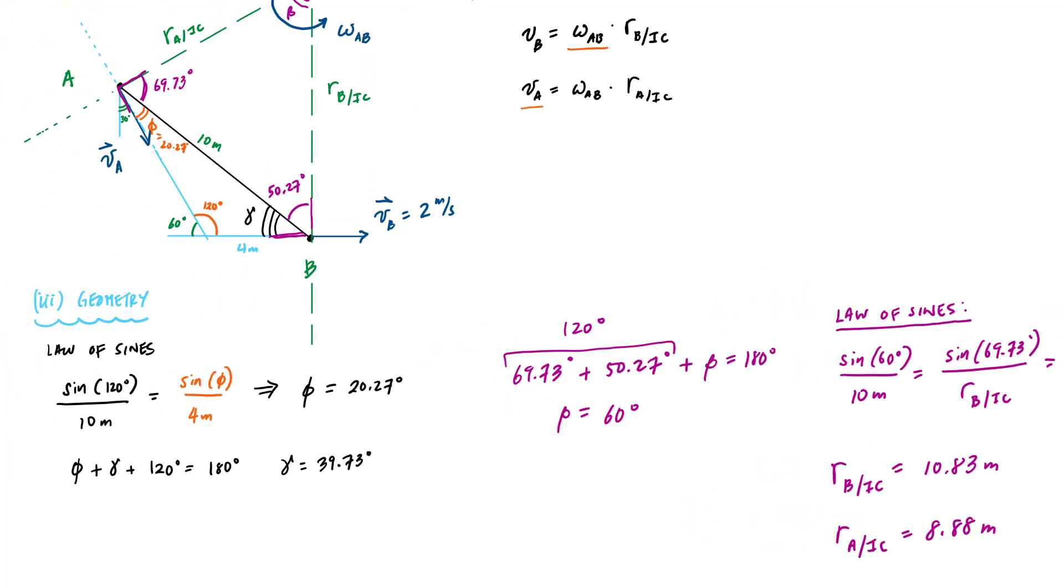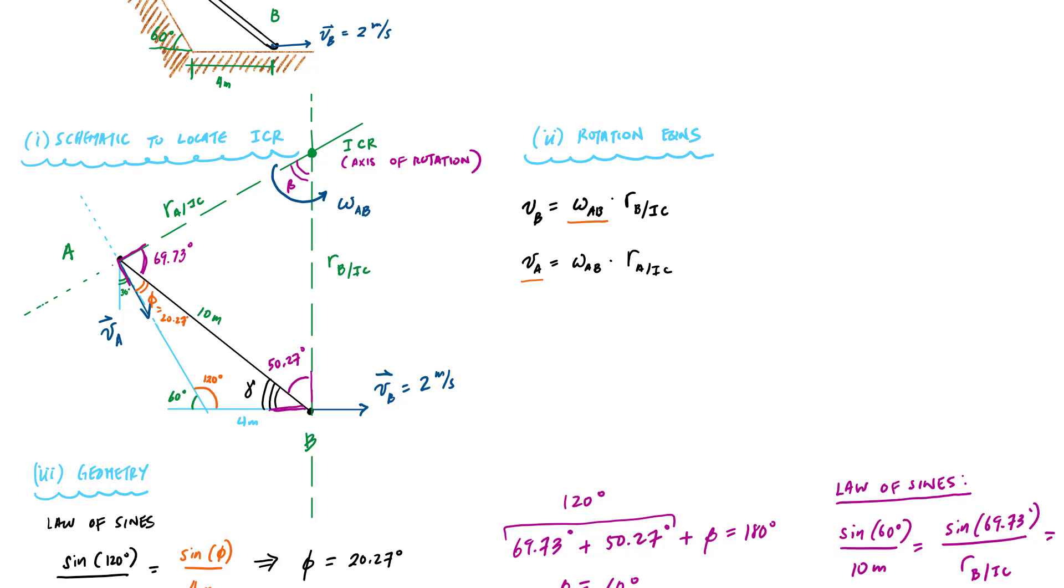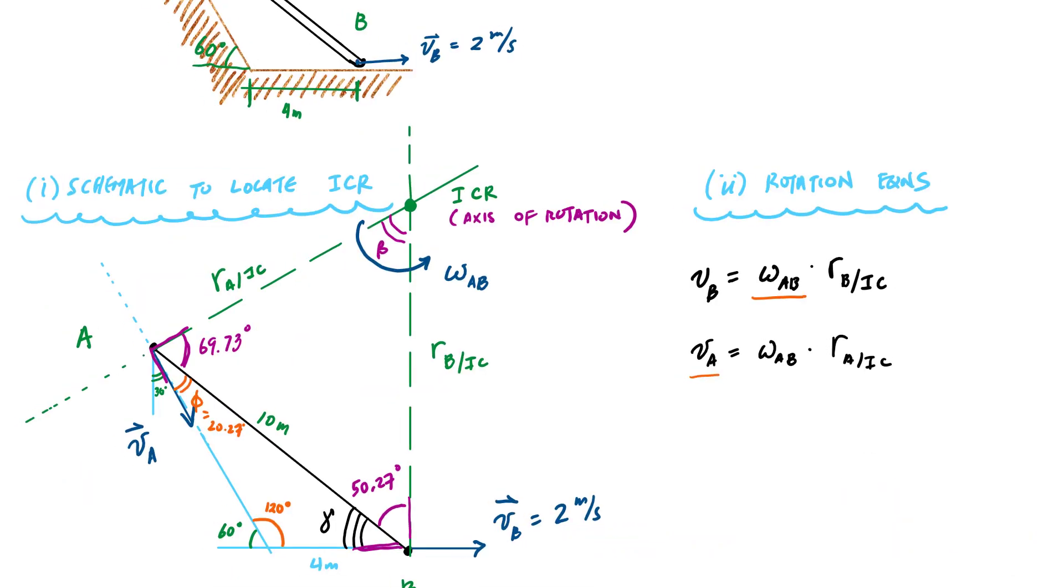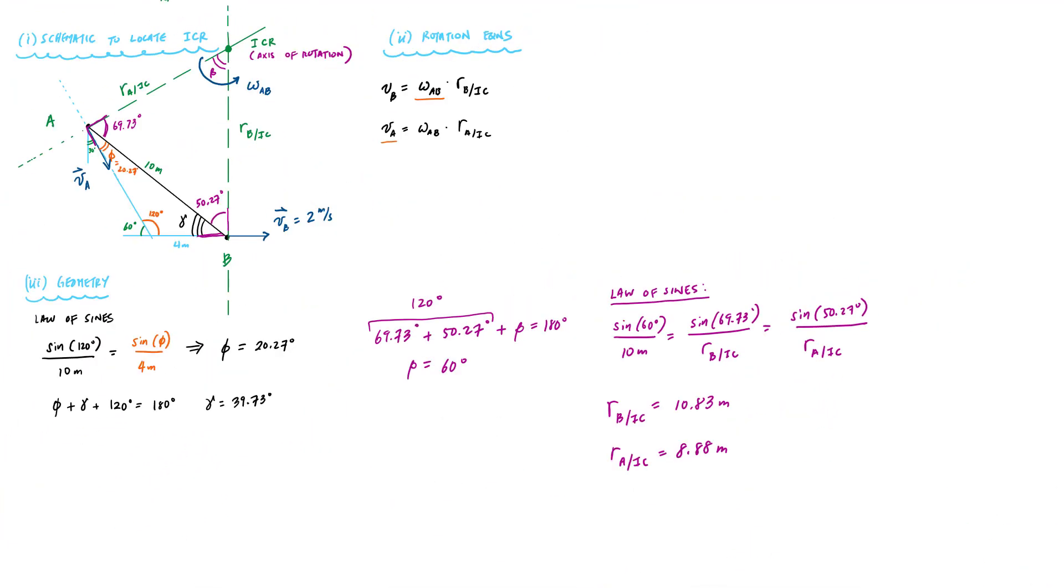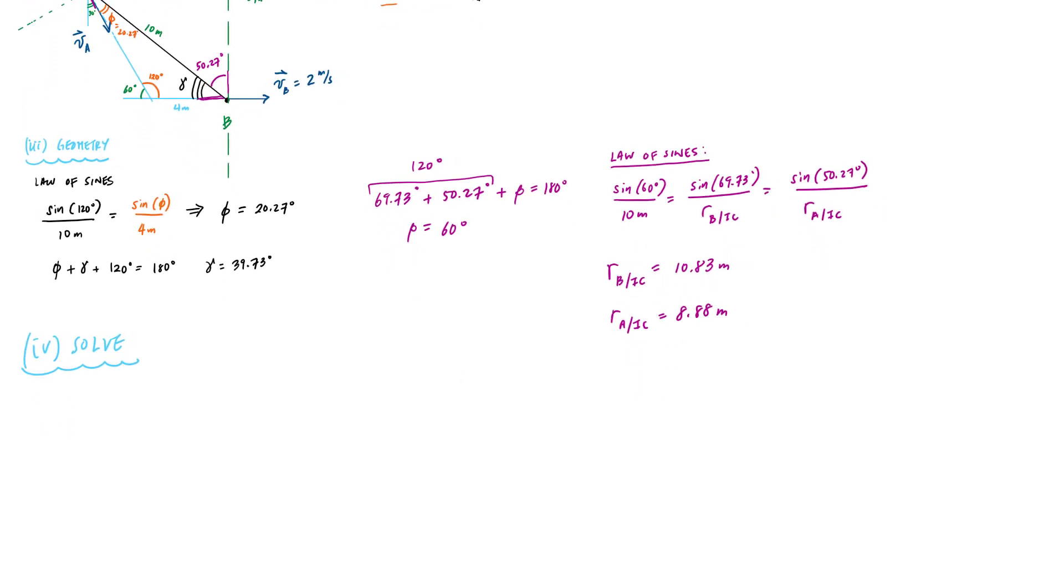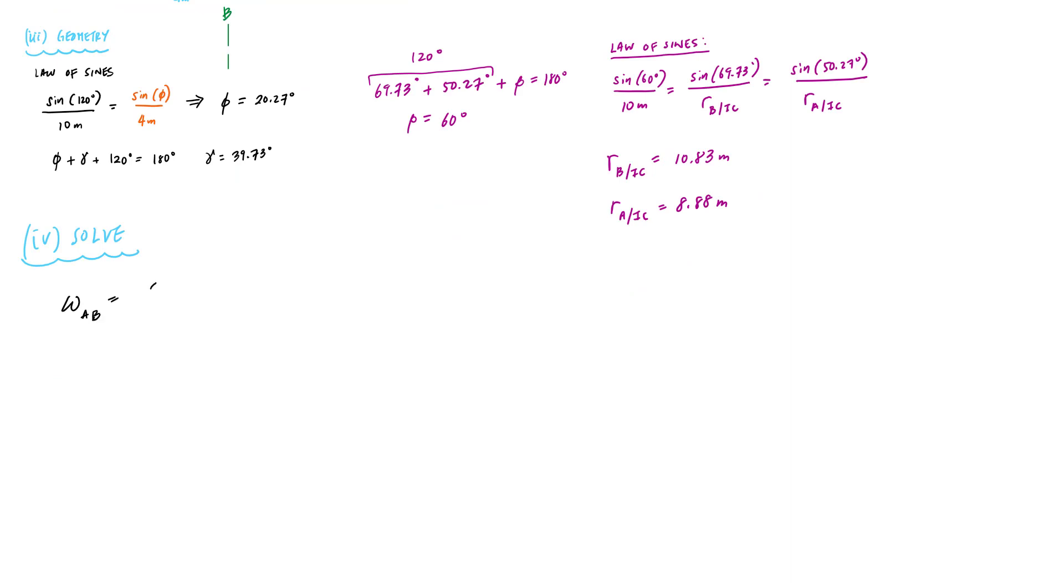And now that I have these, all I'm left to do is just plug and chug and solve. I know all my dimensions. And so now, I'm going to solve. And this would tell me that omega AB is VB divided by RBIC, which is two meters per second divided by 10.83 meters. This is equal to 0.185 radians per second. We already know that it is counterclockwise like this.